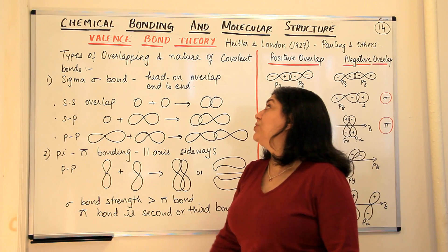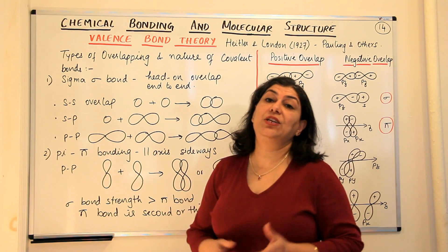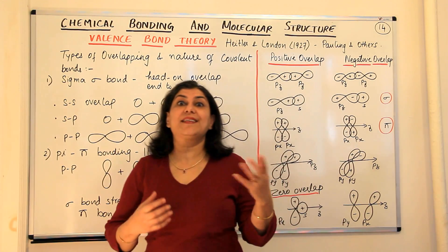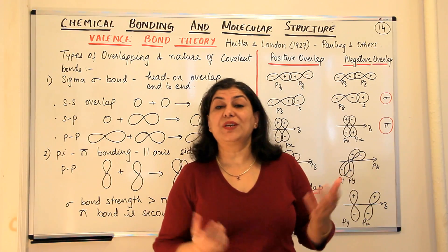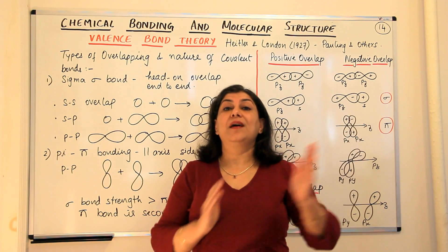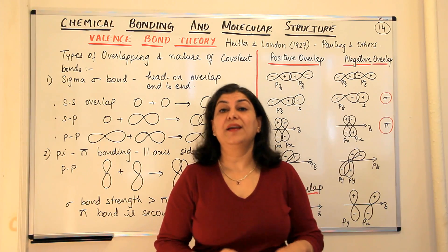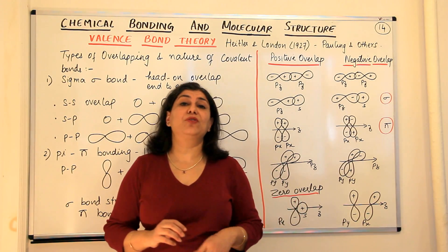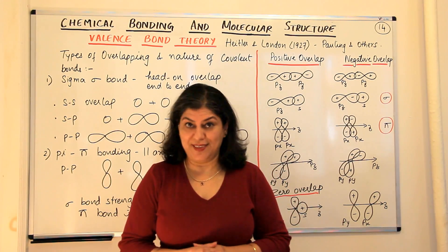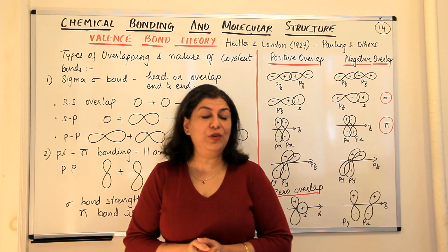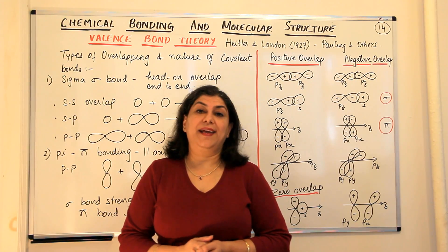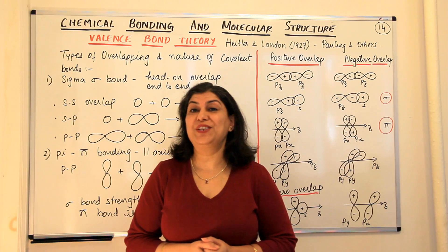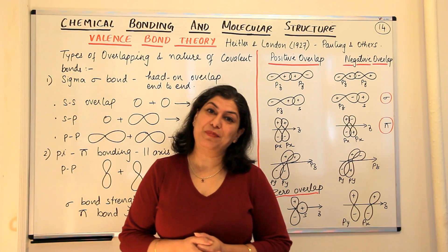This is what I wanted to tell you about the types of overlapping and the nature of covalent bonds. In the next video, I'll start discussing why we could not explain the symmetrical structures and angles of methane, ammonia, or why water is a bent molecule — all of this will be explained on the basis of hybridization. If you found this video helpful, please give it a thumbs up, subscribe to my channel, recommend it to your friends, and keep returning for more videos in chemistry. Thank you for watching and bye bye for now.